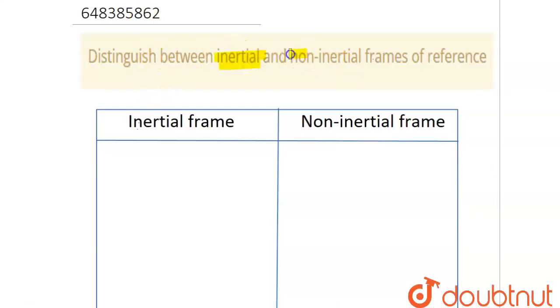inertial and non-inertial frames of reference. Okay, so the very first point for inertial frame of reference: the acceleration on this frame of reference is always zero.